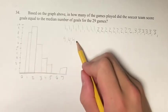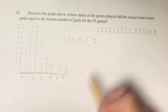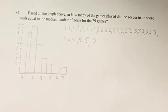For five goals, there's two. And for seven goals, there's one. And then for zero and six, there were no games with that score.